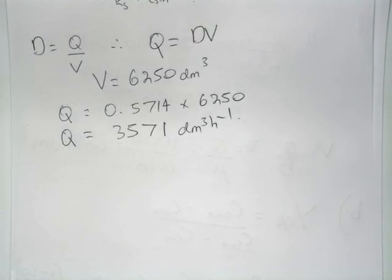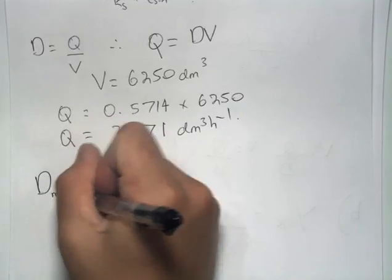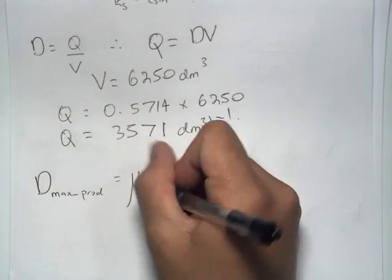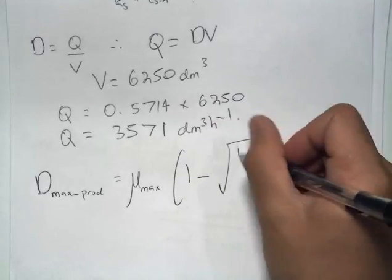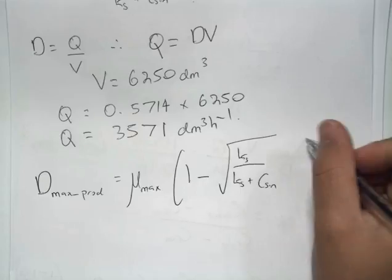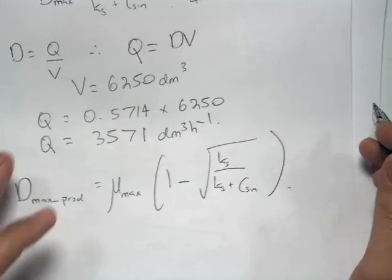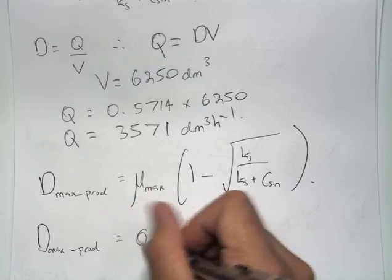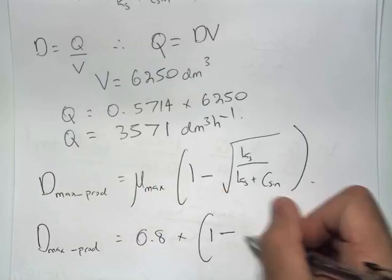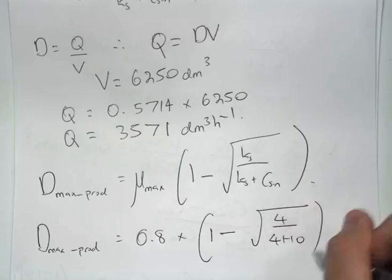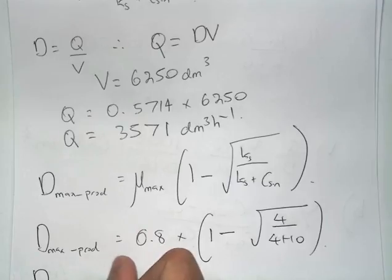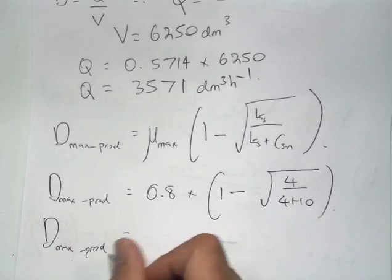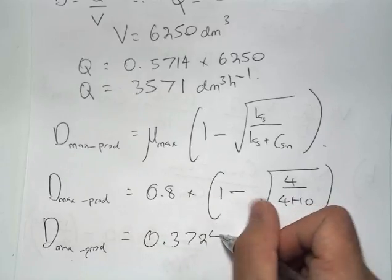In order to calculate the flow rate at which the cell production is at a maximum, we need to calculate the dilution rate at which the cell production rate is at its maximum. We use this formula from the previous question and substitute the values into it. D_max productivity equals 0.8 times 1 minus the square root of 4 over 4 plus 10, and we get a value equal to 0.3724 hours minus 1.